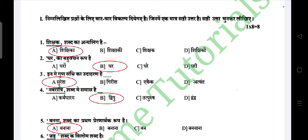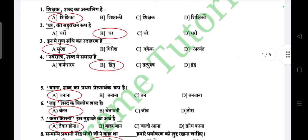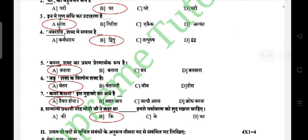First question: eight multiple choice questions, each carries one mark. First question: 'Shikshak shabd ka strilinga shabd' — answer is 'Shikshika'. 'Ghar shabd ka bahuvachan' — answer is 'Ghar'. 'Gun sandhi ka udaharna hai Suresh'. 'Navaratra shabd ke samas hai Dvigu'. 'Banana shabd ka pratham purnartha karup hai Banana'. 'Jad shabd ka vilom shabd hai Chetan'. 'Kamar kasna is muhavare ka arth hai tayyar hona'.